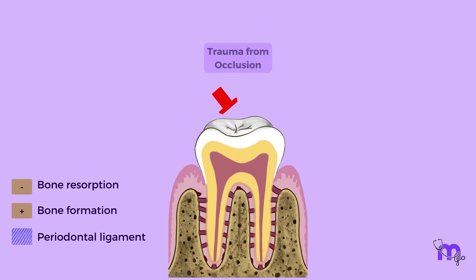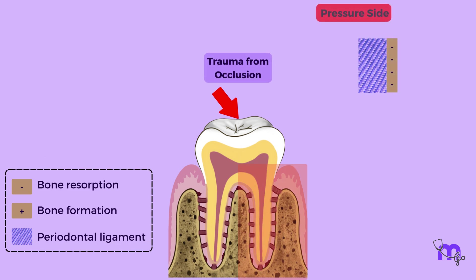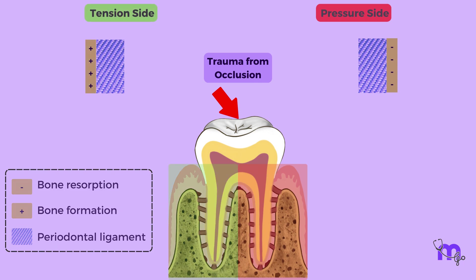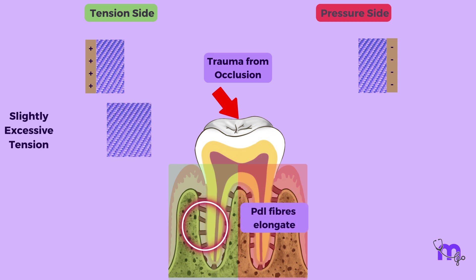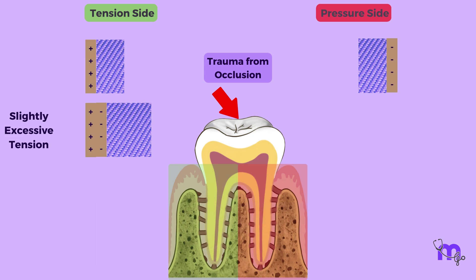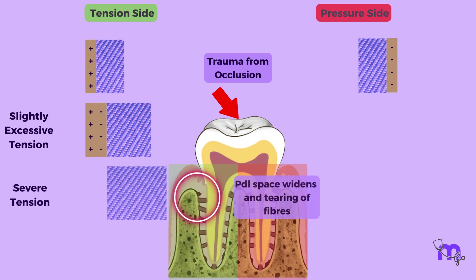In areas of slightly excessive tension, periodontal ligament fibers elongate, apposition of alveolar bone occurs, and blood vessels enlarge. In areas of severe tension, widening of the periodontal ligament space, tearing of fibers, and bone resorption are noted. In areas of slightly excessive pressure, alveolar bone resorption, widening of the periodontal ligament, and decrease in size of blood vessels are seen.